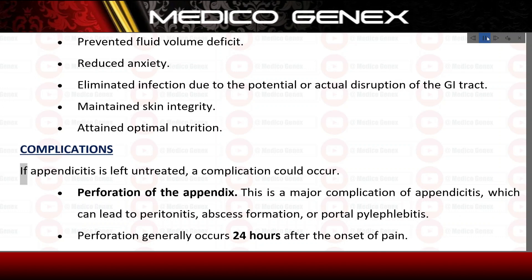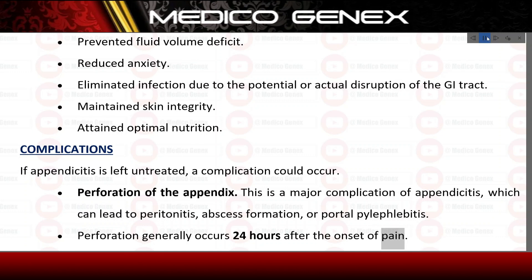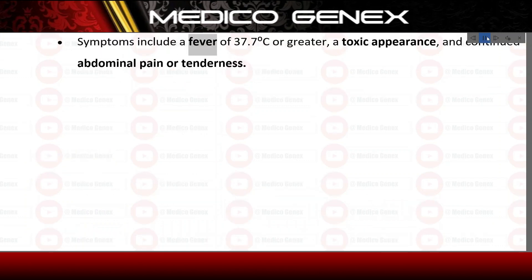Complications. If appendicitis is left untreated, a complication could occur. Perforation of the appendix is a major complication, which can lead to peritonitis, abscess formation, or portal pylephlebitis. Perforation generally occurs 24 hours after the onset of pain. Symptoms include a fever of 37.7°C or greater, a toxic appearance, and continued abdominal pain or tenderness.